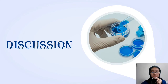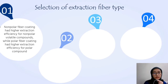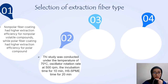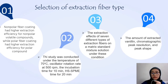My name is Nenu Atika and I am going to present the discussion. First is the selection of extraction fiber type. Nonpolar fiber coating had a higher extraction efficiency for nonpolar volatile compounds, while polar fiber coating had higher extraction efficiency for polar compounds, according to the law of similar mutual solubility. This study was conducted under a temperature of 70 degrees Celsius, oscillator rotation rate at 500 rpm, incubation time of 10 minutes, and HS-SPME time of 20 minutes. The extraction effect of seven different types of fiber on a matrix standard was evaluated, and the amount of extracted vanillin, chromatographic peak resolution, and peak shape were used to compare the extraction capacity of the seven different fiber types.